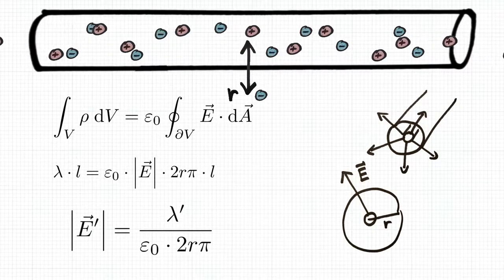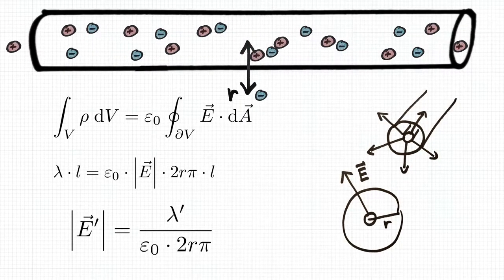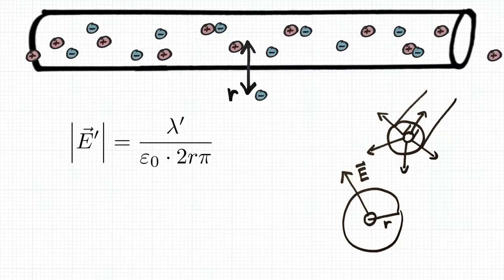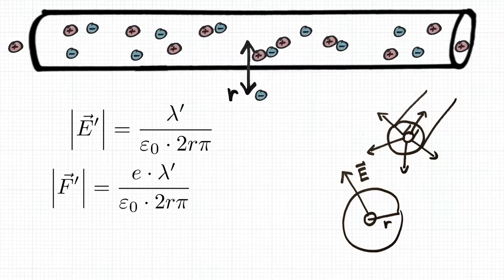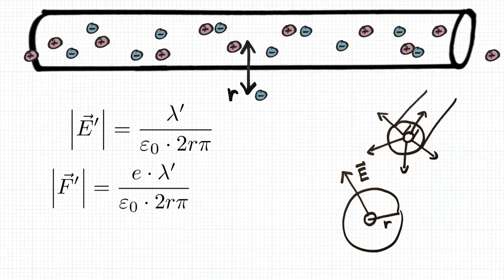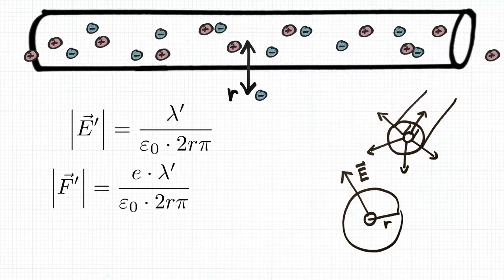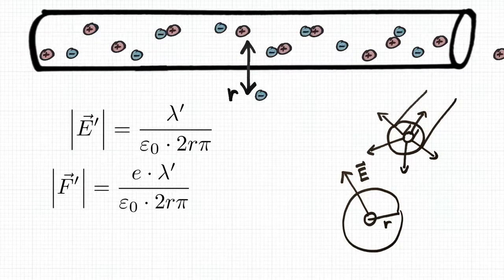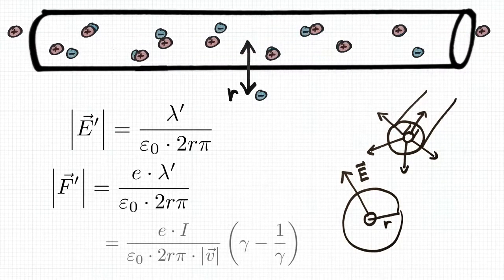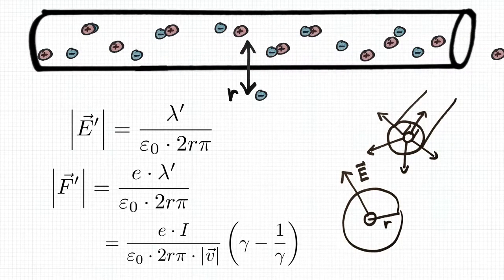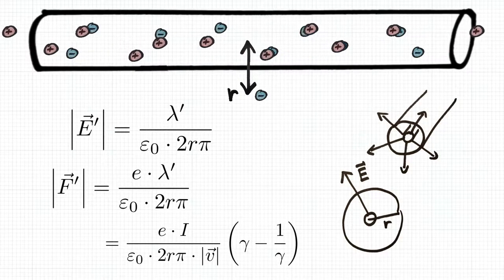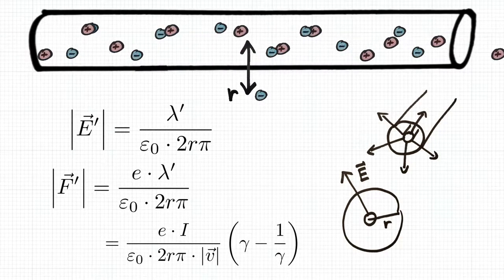This yields the absolute value of the electric field at distance r, and I'm adding primes again, because we now would like to apply this to the primed frame of reference. The absolute value of the electrostatic force is e times E, so fundamental charge times the absolute value of the electric field. So we have an expression for the absolute value of the force in the primed frame of reference, and we can insert our expression for lambda prime, which relates it back to quantities of the unprimed frame of reference.